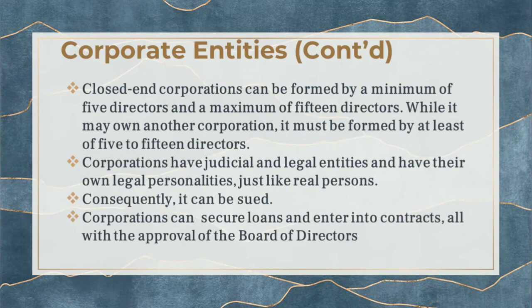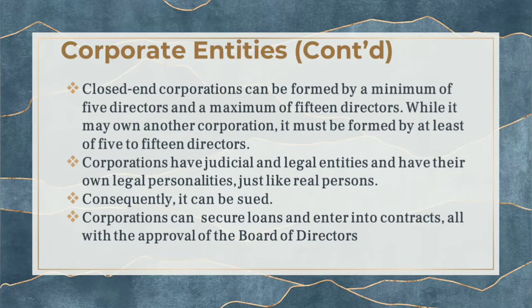For a close-end corporation, it can be formed by a minimum of 5 and a maximum of 15 directors. They are not listed on the PSE. While a close-end corporation may own another corporation — for example, Ombed Corporation owning Vargas Corporation — they must be formed by at least 5 to 15 directors each. The board of directors of one company cannot be the same as the other.